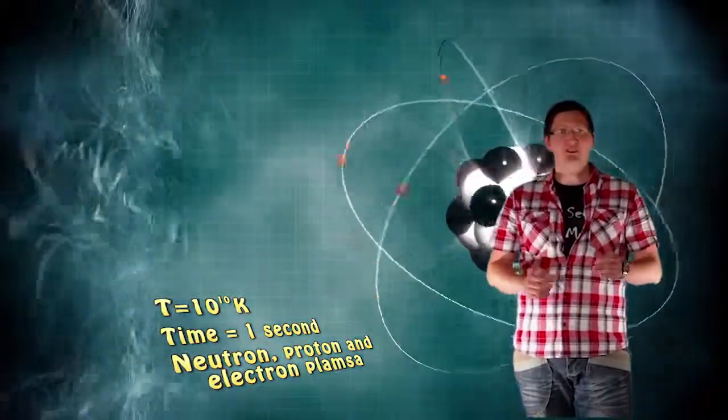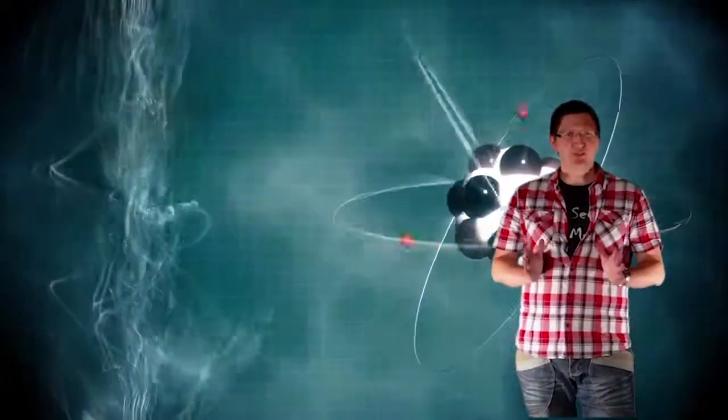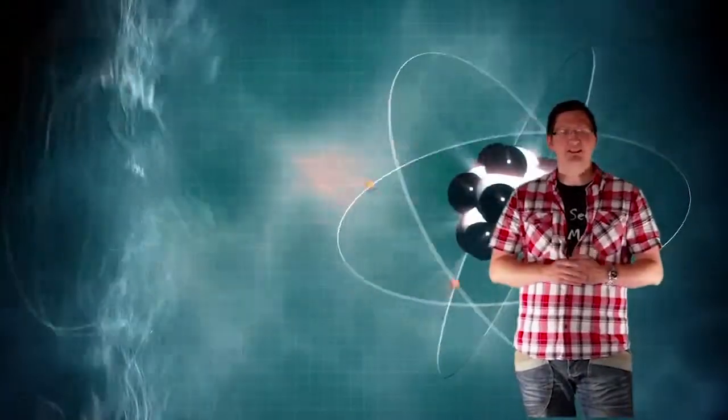A hydrogen atom consists of one proton and one electron. But the universe was far too hot at that stage for hydrogen atoms to exist, so the protons existed and other forms of matter.